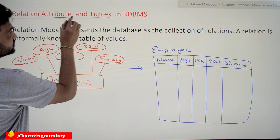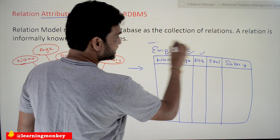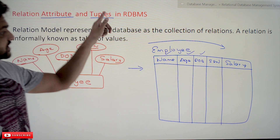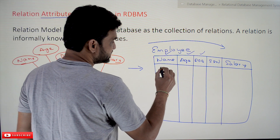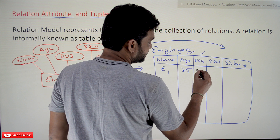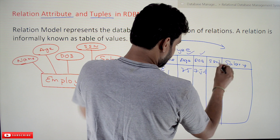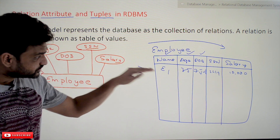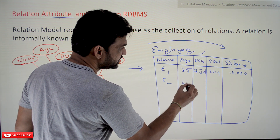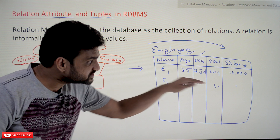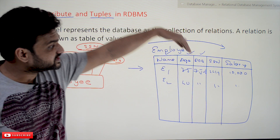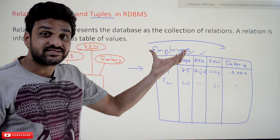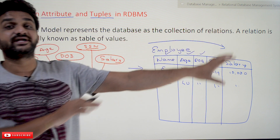Each row represents a tuple, and each column is called an attribute. This entire table is what we call a relation. For example, employee 1 is age 35, date of birth July 7th, SSN 1234, and salary 10,000. Each row is representing an entity, each column is representing the property of an entity, and the collection of all those entities is what we call a relation. The collection of all the relations is what we call a database.